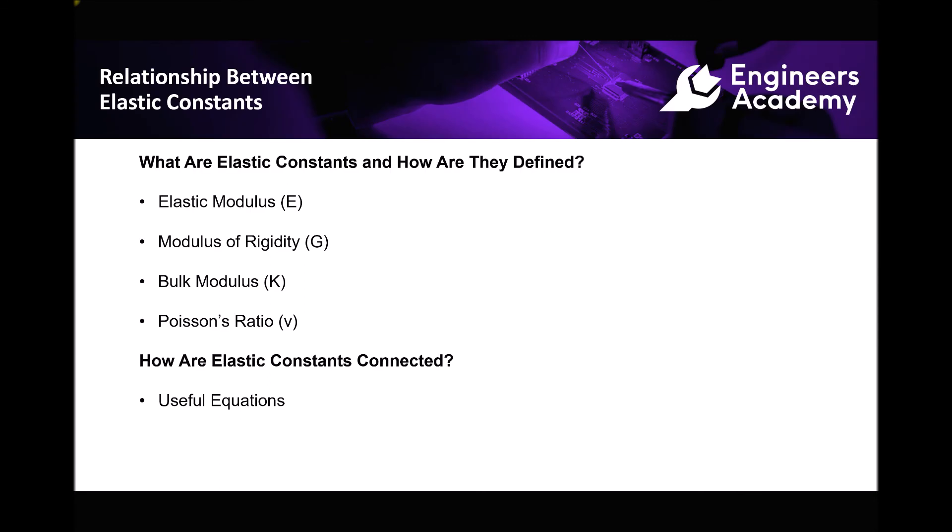To summarise, in this video we have introduced our four elastic constants: elastic modulus, modulus of rigidity, bulk modulus, and Poisson's ratio, and we have discussed briefly the equations that connect these together. In the next video we are going to look at how we apply these equations to determine the unknown elastic constants for a given material.